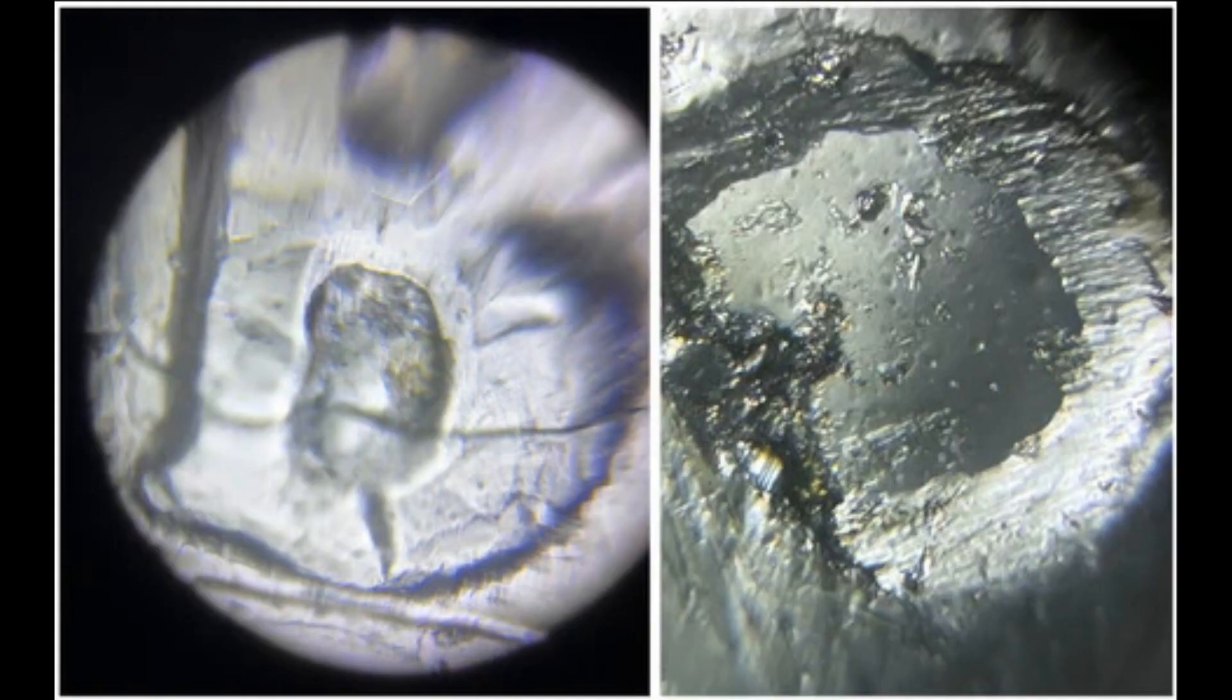Technique number two, cast impression. Objects that are opaque cannot be viewed through a Foldscope because a Foldscope requires light to transmit through the object being studied. In order to study the three-dimensional features of opaque objects, impressions can be made using transparent materials like super glue or clear nail polish. To make a cast impression,